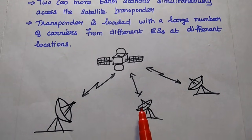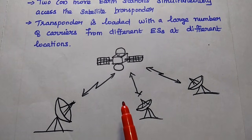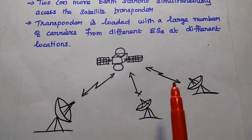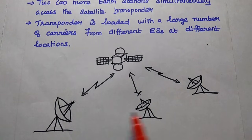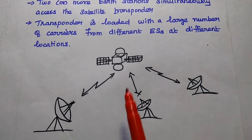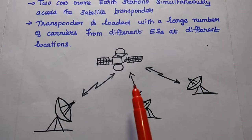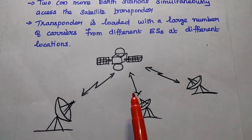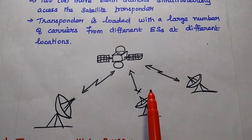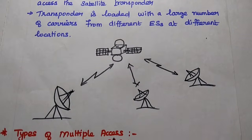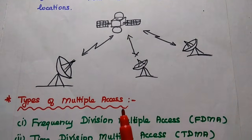Simply, we can say multiple access is the ability of a large number of earth stations to simultaneously interconnect their data through a satellite. The data can be voice data, teletype, facsimile, TV links, etc. This is called multiple access technique in satellite communication.